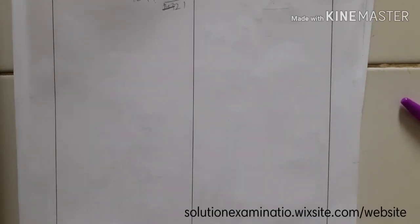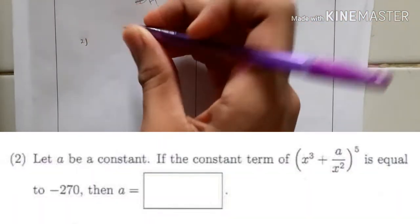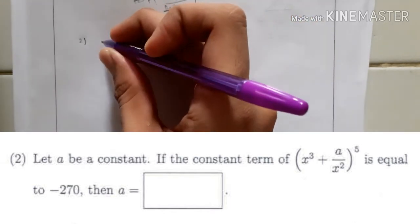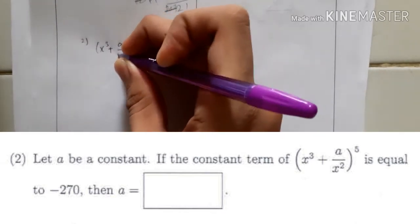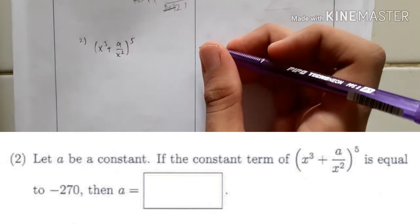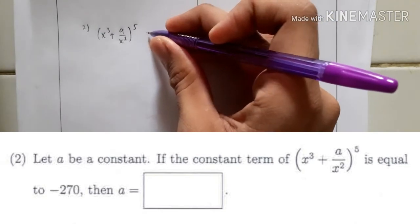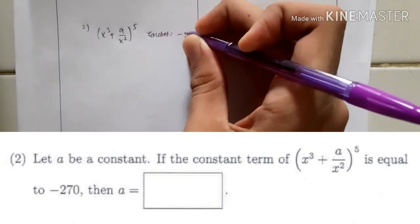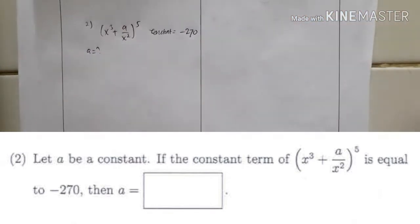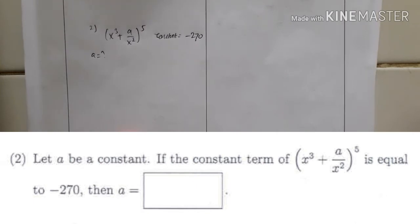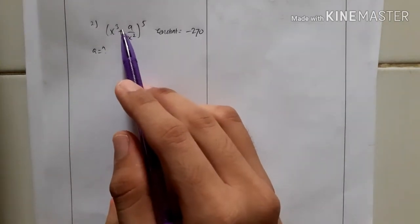It's been a while, so let's continue to discuss Part 1, Number 2. The question asks you to find the constant: let 'a' be a constant, and if the constant term of (x³ + a/x²) to the power of 5 is equal to minus 270, find 'a'.